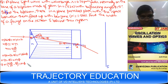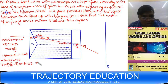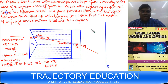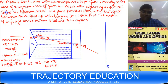Applying Snell's law at the final surface into air: N sin φ = 1·sin δ, so for small angles N·φ = δ. Therefore δ = Nθ − N'θ, that is δ = (N − N')θ. This is the total angle of deviation.